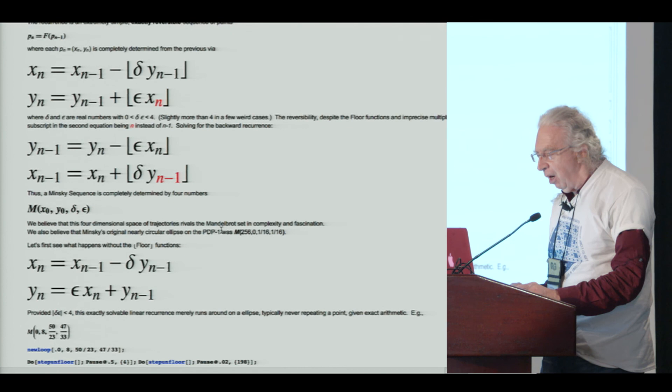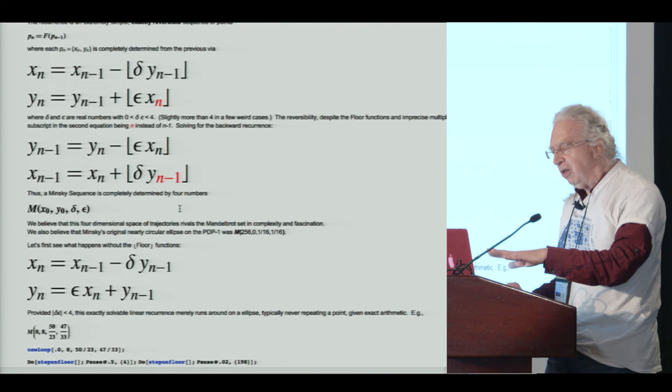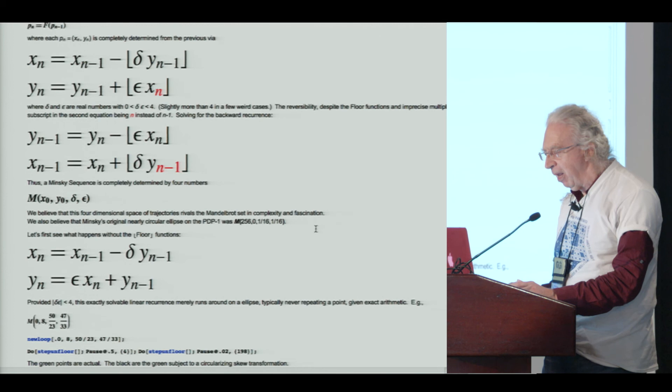We have four numbers — the starting x, starting y, and the two multipliers, delta and epsilon, that go in these floors. Those four numbers each define a trajectory. And because of the reversibility of this recurrence, the trajectory must loop back to the very first point, or blow up and never loop back, because it's invertible — it can't fork. The space of these four numbers is, I think, as complex and as fascinating as the Mandelbrot set.